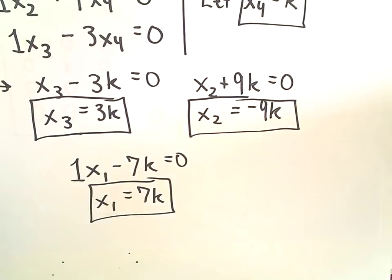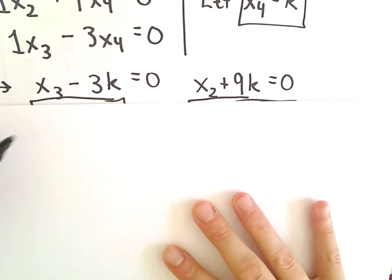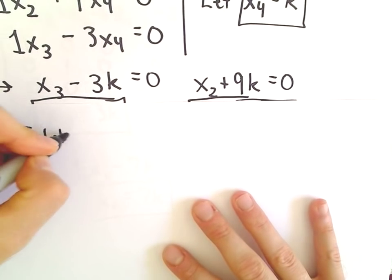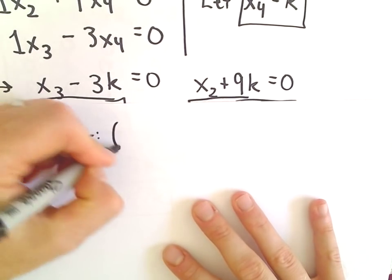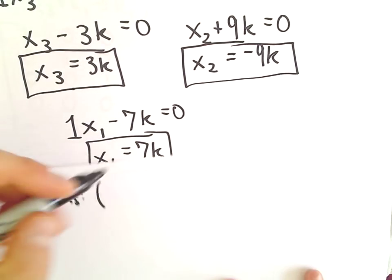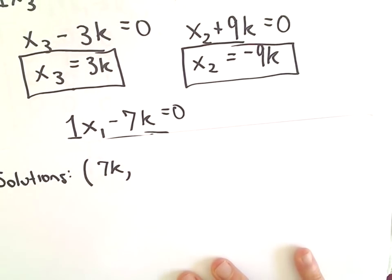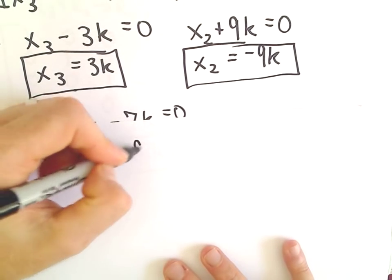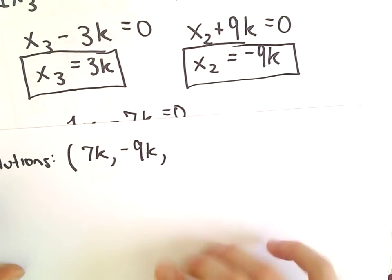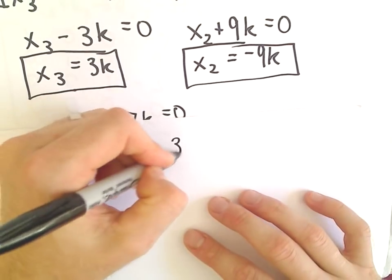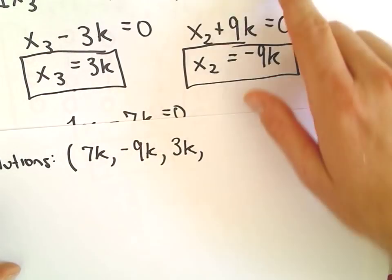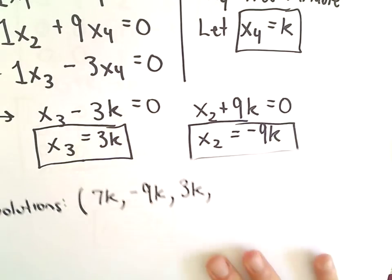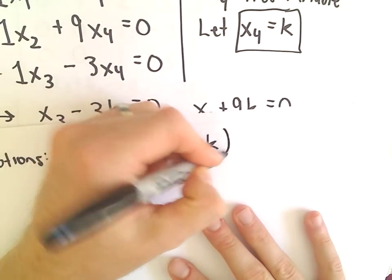So what this tells us, it says our solutions are going to be of the form: x sub 1 will equal 7k, x sub 2 is going to be negative 9k, x sub 3 is going to be 3k. And again, x sub 4, we pick that just to be kind of our starting value of k.